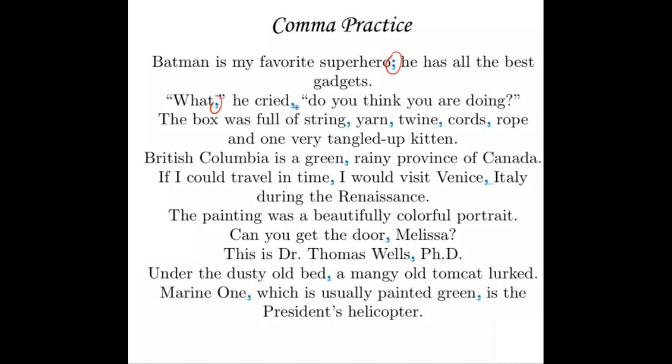Next: "What, he cried, do you think you are doing?" — you're taking a little break from the quote to say something else and then going back, so you set the break off with commas; one goes inside the quotation marks at the end of the quotation, and one goes outside at the beginning. Then: "The box was full of string, yarn, twine, cords, rope, and one very tangled up kitten." This is a list, so we use commas throughout. If you put a comma after rope — the Oxford comma — that's also totally fine. You can use it or leave it out.